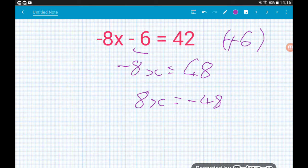It only works if you have one positive term and one negative term on opposite sides of an equal sign. Now we've got 8x equals minus 48. If we divide by 8, we're going to get x equals minus 6. Job's a good'un.